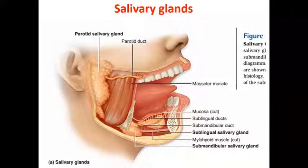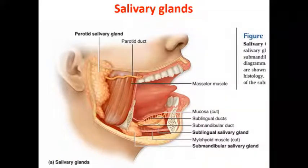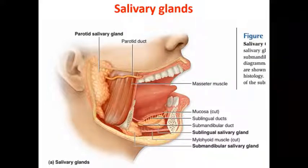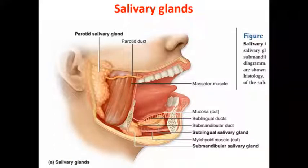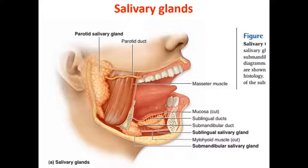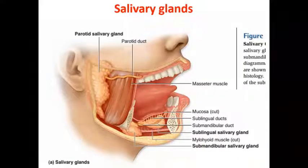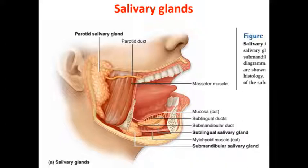The major salivary glands are: the parotid salivary glands (paired), the sublingual salivary glands (just under the tongue), and the submandibular salivary glands (beside the mandible). There are also buccal salivary glands in the buccal cavity that can produce saliva. These are examples of accessory organs of the GI tract.